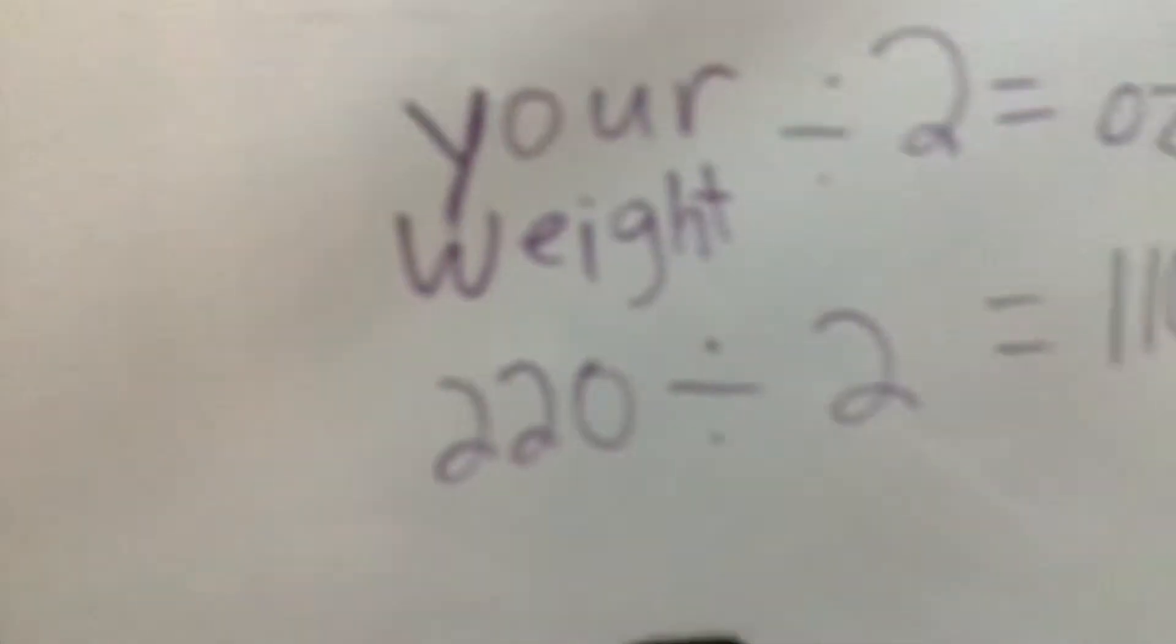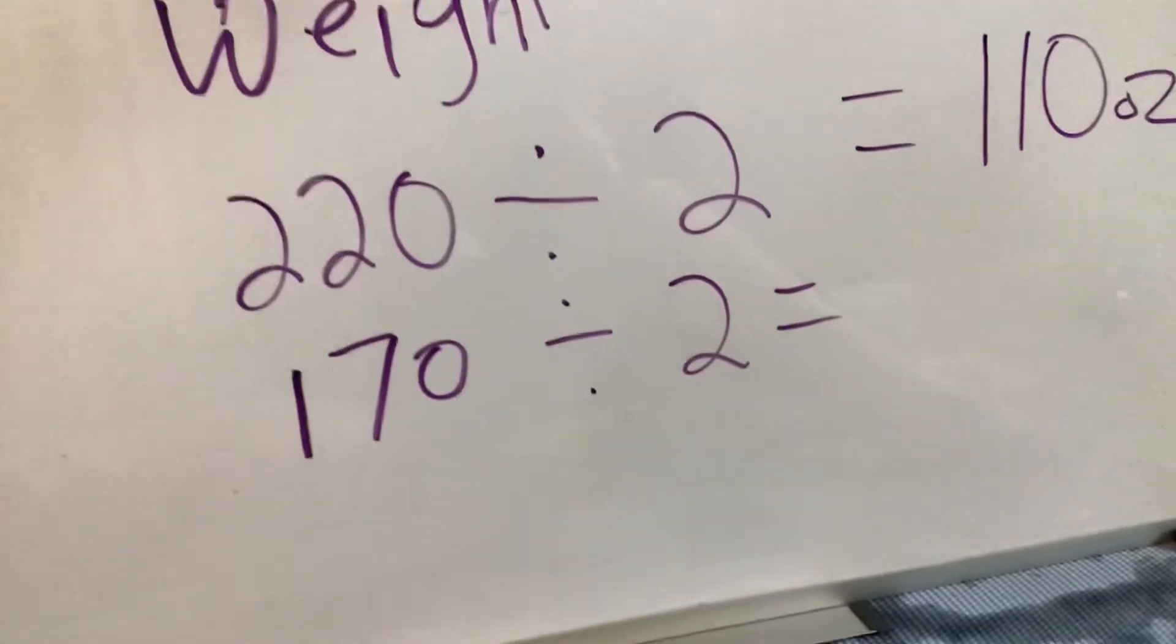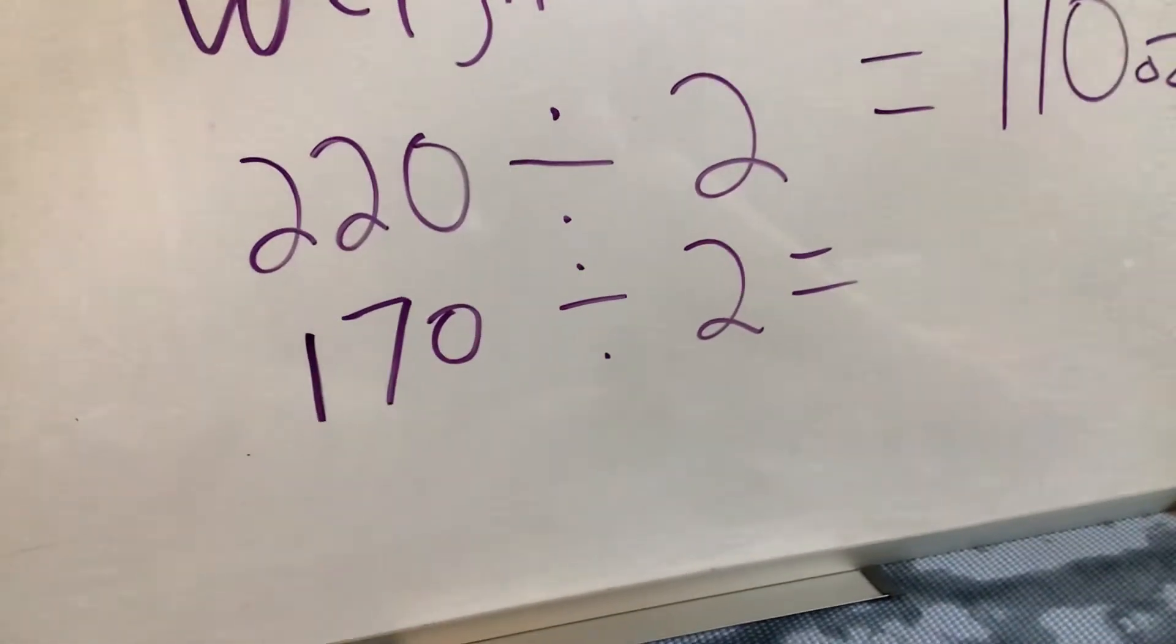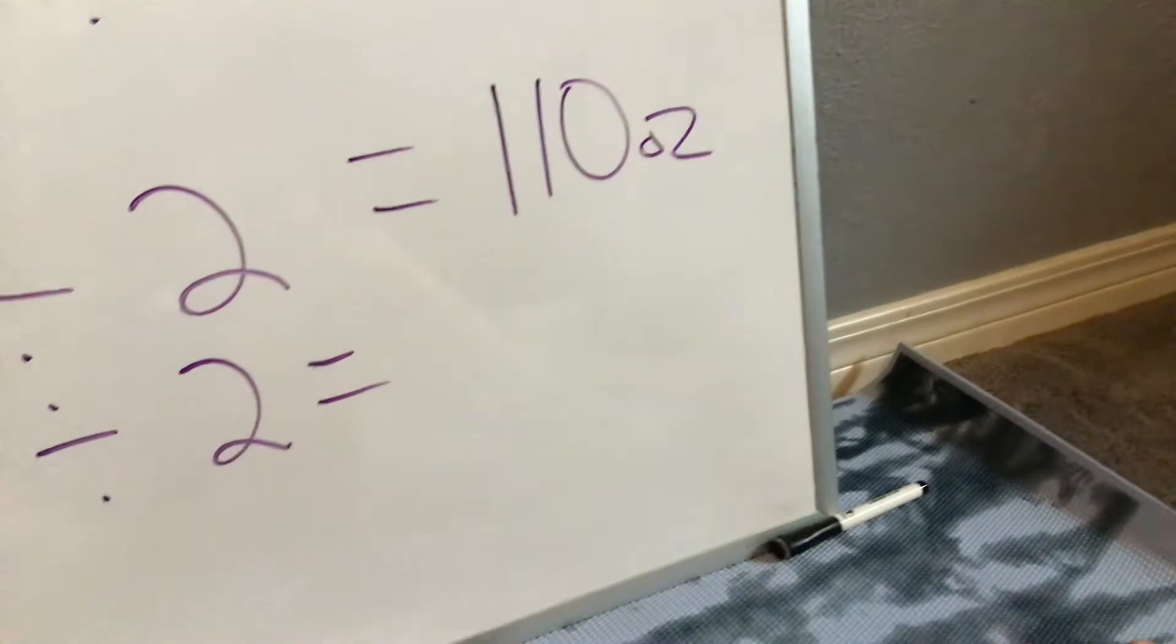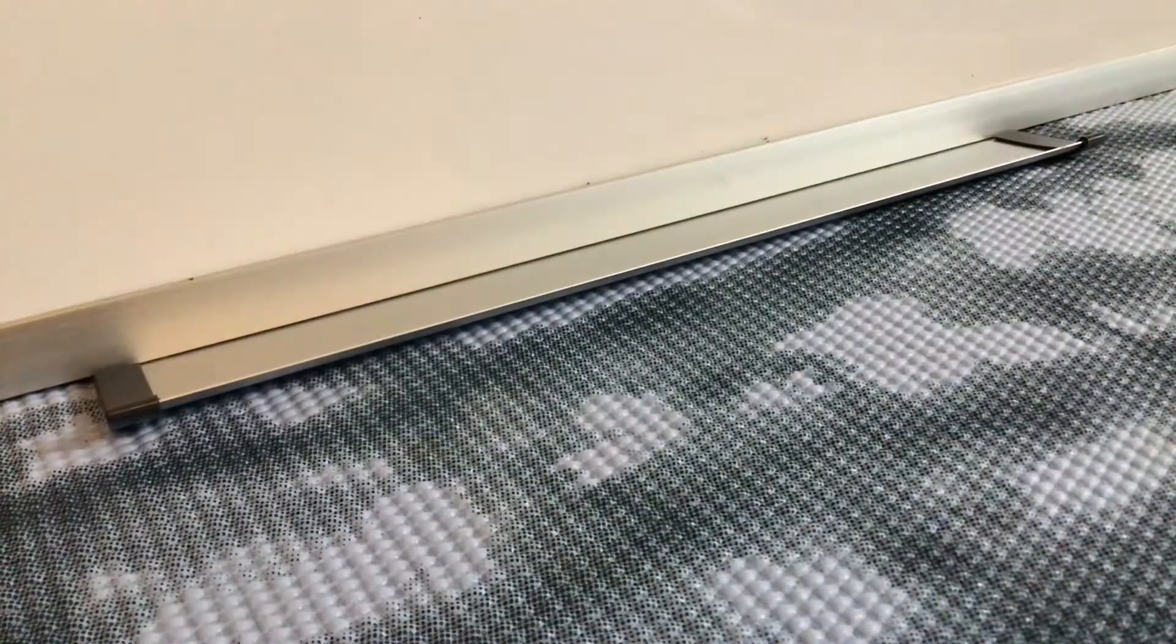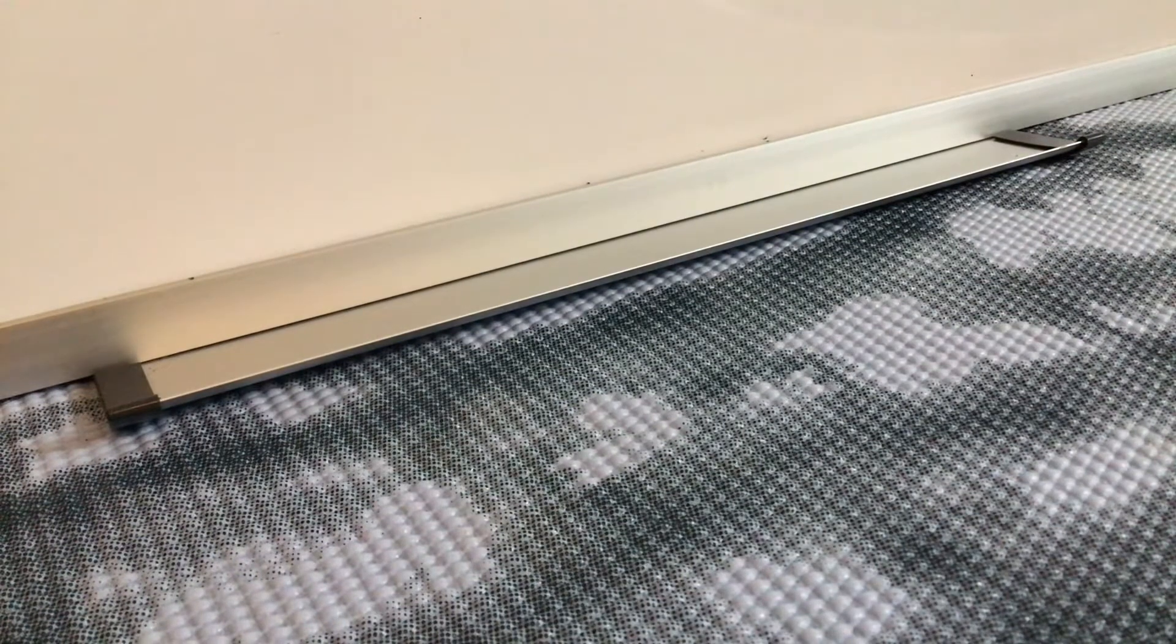So let's see here, 168.2 is my weight. Let's round it up. I'm gonna round it up to 170. 170 divided by two, and however much 170 divided by two is, that's how many ounces I should drink per day. Let's go ahead and use our calculator.